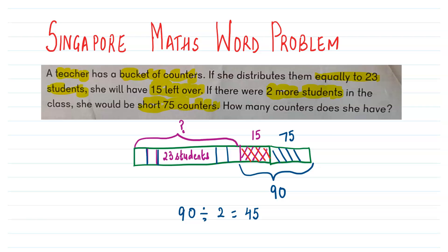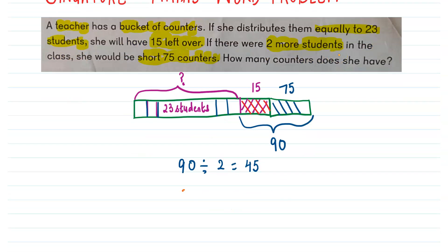So 45 is the number of counters which each student was getting. To find out the total number of counters, we have to multiply 23 by 45.